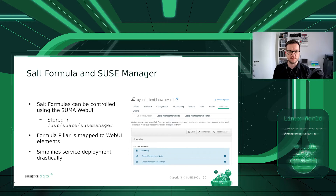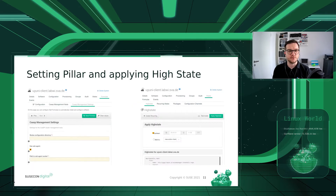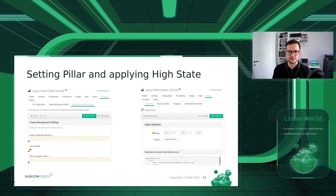In this example we selected a Salt formula about CaaSP. In the next step we click Save and get an overview of the pillar information for that Salt formula — in this case, CaaSP management settings — where we check whether to use an SSH agent, enter a configuration directory, and so on. After completing this, we click Save Formula and then simply apply the high state. The Salt minion on the registered client will retrieve the information and configure services and configuration files as requested.